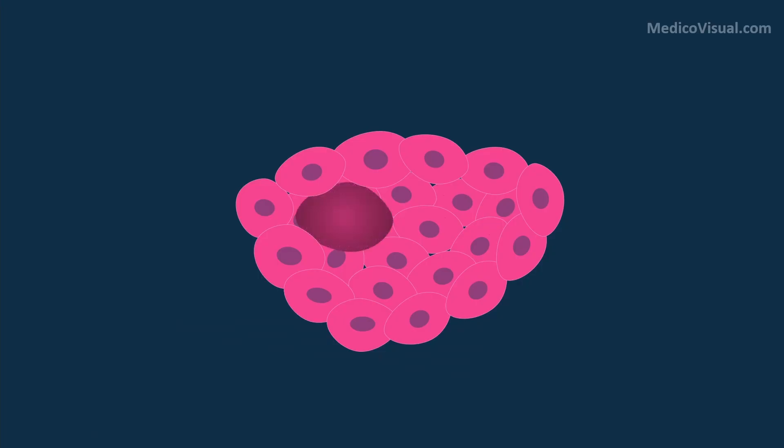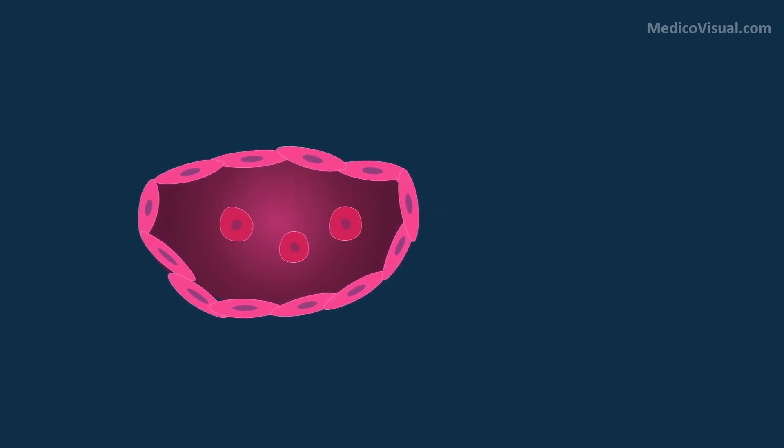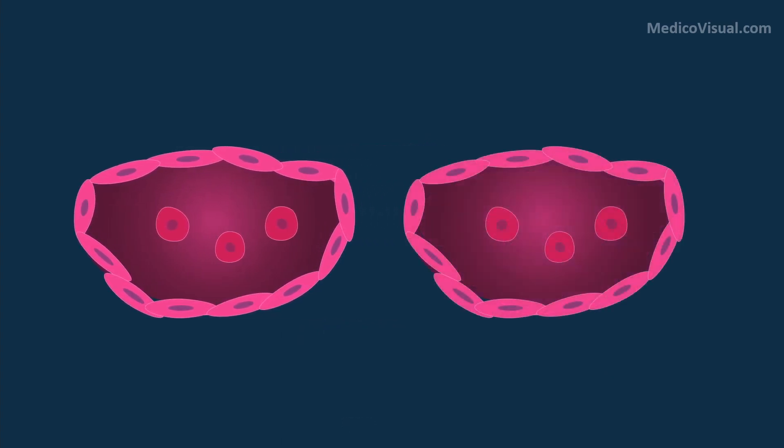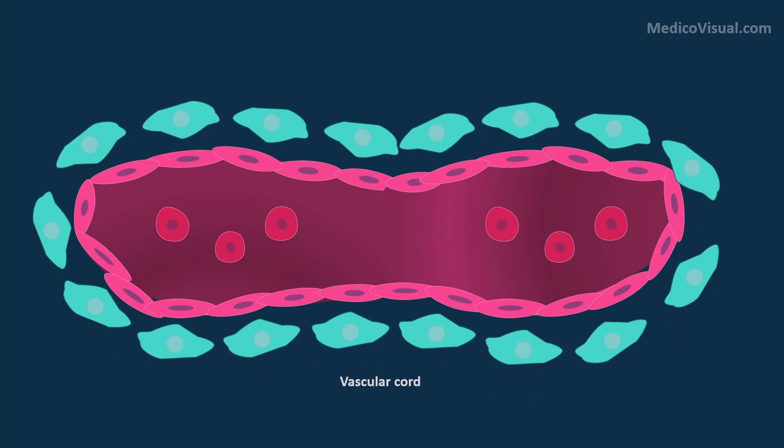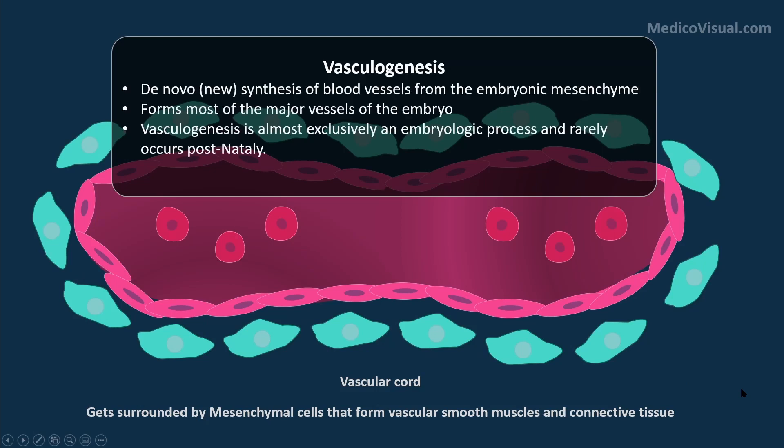The central cells of each blood island die and a cavity forms. Some cells that remain alive within this cavity are the embryonic precursors of blood cells. The peripheral cells flatten out to form the endothelial cells. They orient themselves in such a way that they coalesce with the neighboring islands to form the long vascular cords. The mesenchymal cells around them form the surrounding connective tissue and smooth muscle. This process is called vasculogenesis. It is an exclusive embryologic process.